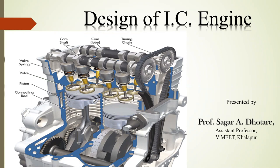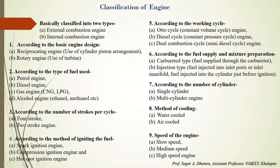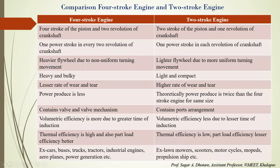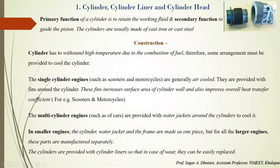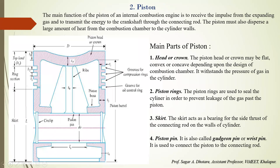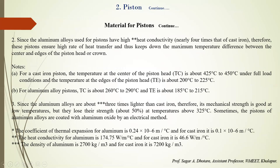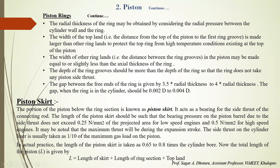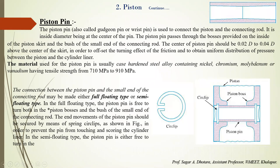Hello everyone and welcome to this DMS lecture. Today we will discuss the design of IC engines. As we previously covered: classification, comparison between internal and external engines, comparison between SI and CI engines, main components of the CI engine, cylinder liner and cylinder head, the piston, piston material, piston head and crown, piston rings, why piston rings are used, and the piston skirt.